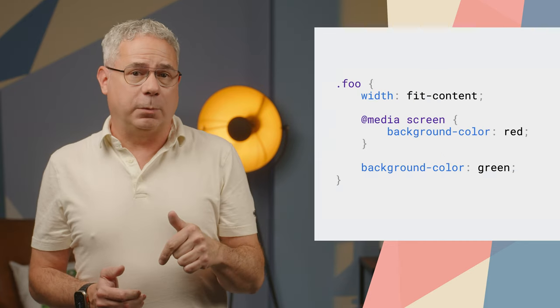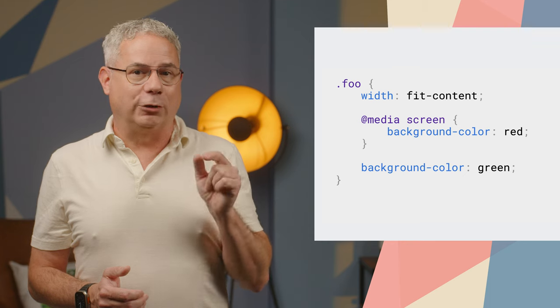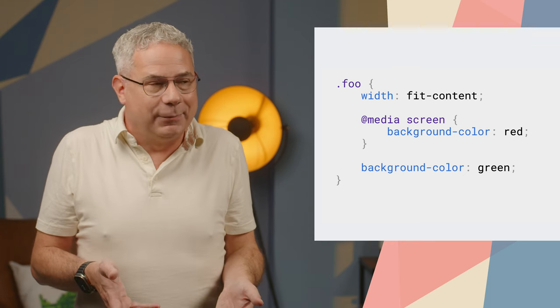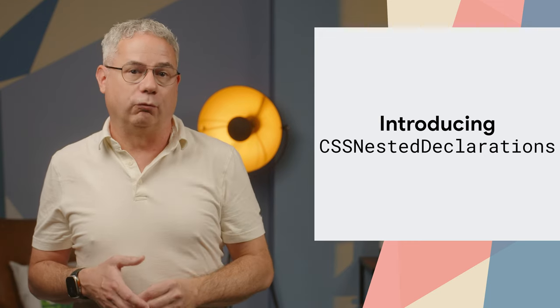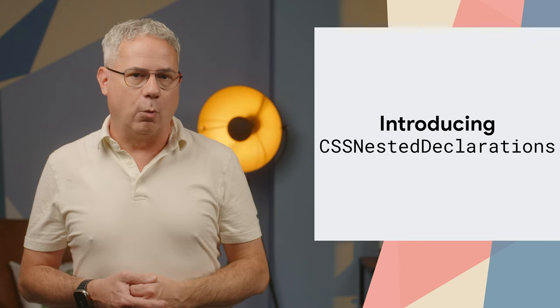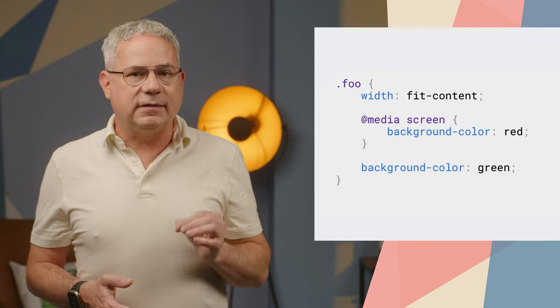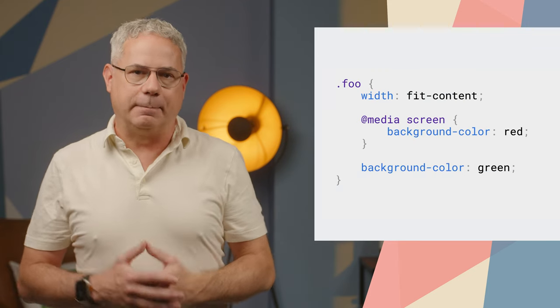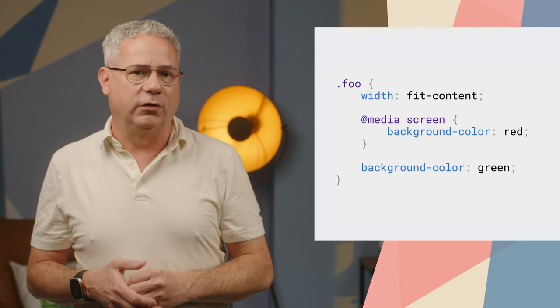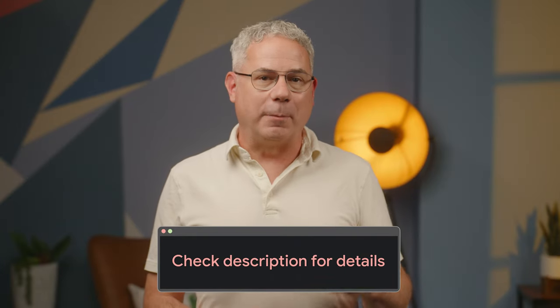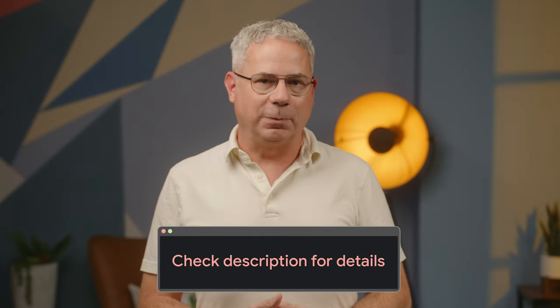For example, with this CSS block, you would expect the background color to be green — it comes last — but it's red. To fix edge cases like this, the CSS working group introduced the nested declarations rule, which was implemented in Chrome 130. Now that same CSS block has a green background. If you were interleaving bare declarations with nested rules, you should double check your code. Check out Bramis' article on web.dev for a more in-depth explanation.